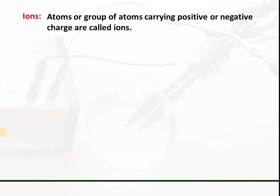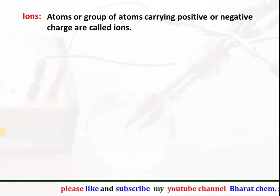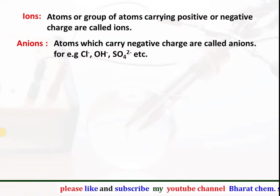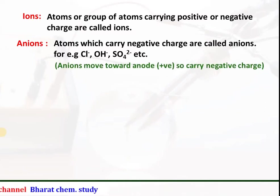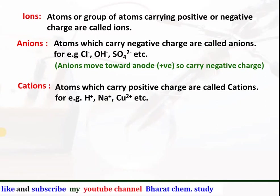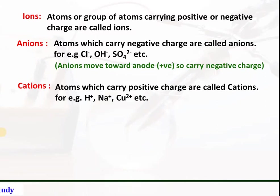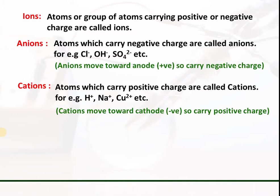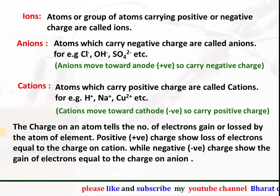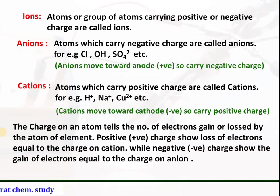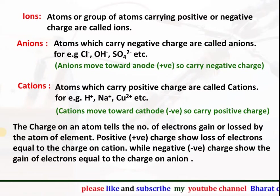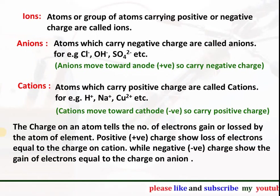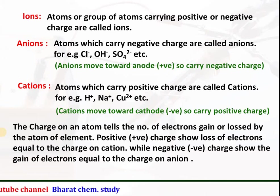Ions: atoms or a group of atoms carrying positive or negative charge are called ions. Anions: atoms which carry negative charge are called anions — e.g. Cl⁻, OH⁻, sulphate ion. Anions move towards the anode, i.e. the positive electrode. Cations: atoms which carry positive charge are called cations — e.g. H⁺, Na⁺, Cu²⁺. Cations move towards the cathode, i.e. the negative electrode. The charge on an atom tells the number of electrons gained or lost. Positive charge shows loss of electrons equal to the charge on the cation; negative charge shows gain of electrons equal to the charge on the anion. So Na⁺ means it lost one electron and Cl⁻ means it gained one electron.